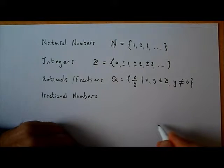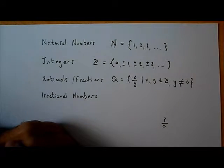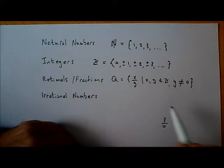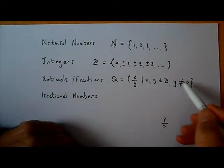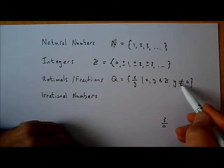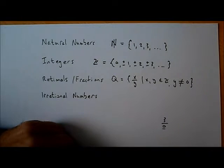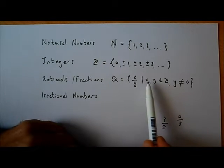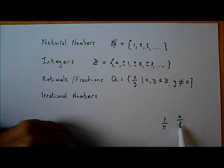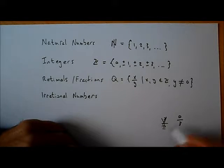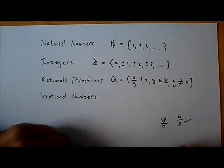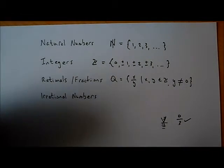For example, 3 over 0 might look like a fraction but it's actually not, because by the definition of a fraction, x over y, both x and y are integers — 3 is an integer and 0 is an integer — but one of the conditions is that y cannot be zero. Here y is zero, so 3 over 0 is not a fraction. However, 0 over 3 is a fraction because both parts are integers and the denominator is not zero.